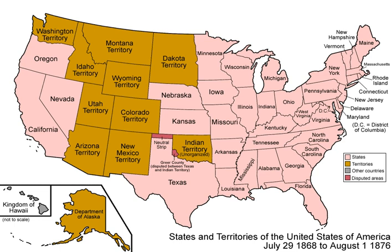Territories of the United States are sub-national administrative divisions directly overseen by the United States federal government. Unlike U.S. states and Native American tribes which exercise limited sovereignty alongside the federal government, territories are without sovereignty. The territories are classified by whether they are incorporated and whether they have an organized government through an organic act passed by the U.S. Congress. The U.S. has 16 territories in the Caribbean Sea and the Pacific Ocean.